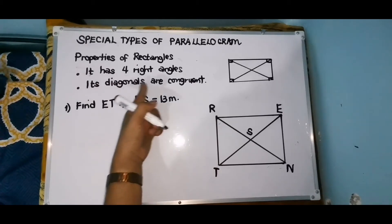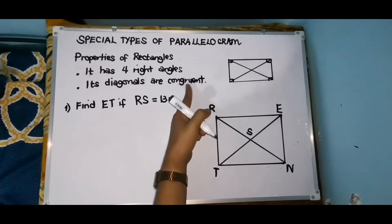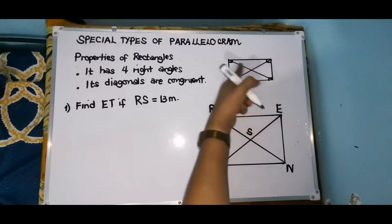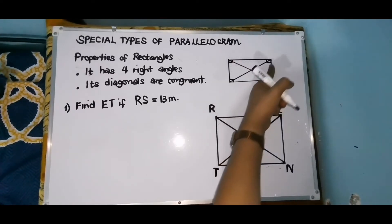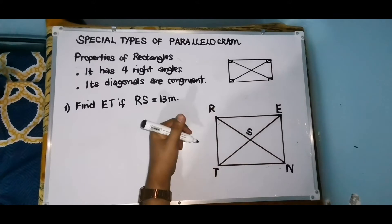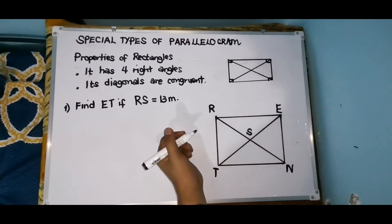And then, its diagonals are congruent. Ito yung kanyang diagonal. You have here two diagonals, and they are congruent.